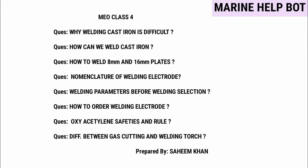In this MU Class 4 video, I have covered many questions on the topic of welding. The questions are: why welding cast iron is difficult, how can we weld cast iron, how to weld 8 and 16 mm plates, nomenclature of welding electrode, welding parameters before selection, how to order welding electrode, oxy-acetylene safety and rules, and the difference between gas cutting and welding torch. Defects and non-destructive testing will be covered in the next video.